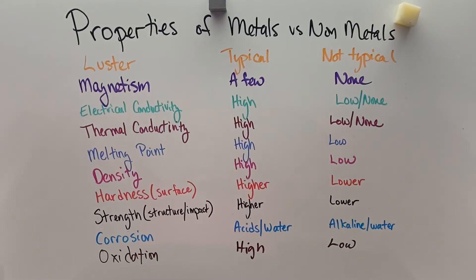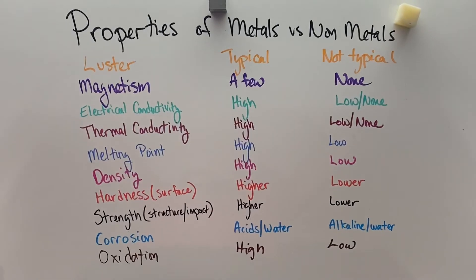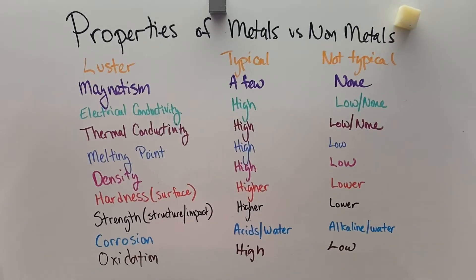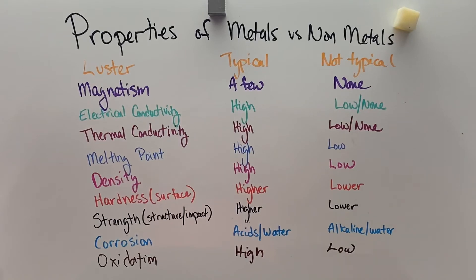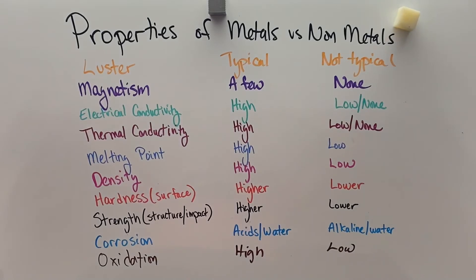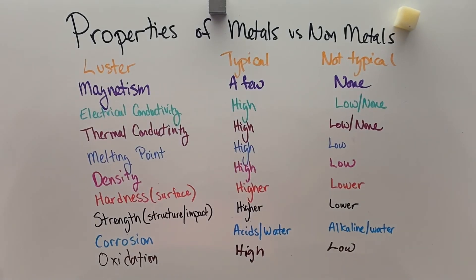So when we're choosing a substance for an application, we want to keep in mind all of these properties so that we can select the right metal or non-metal substance for whatever it is we need.